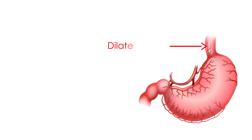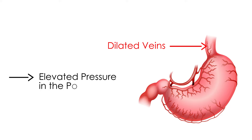Esophageal varices are essentially the dilated veins that exist in the distal esophagus. These dilated veins can rupture, and if they rupture, they can cause an episode of massive bleeding. There is an elevated pressure in the portal venous system, and that's why these veins are dilated.